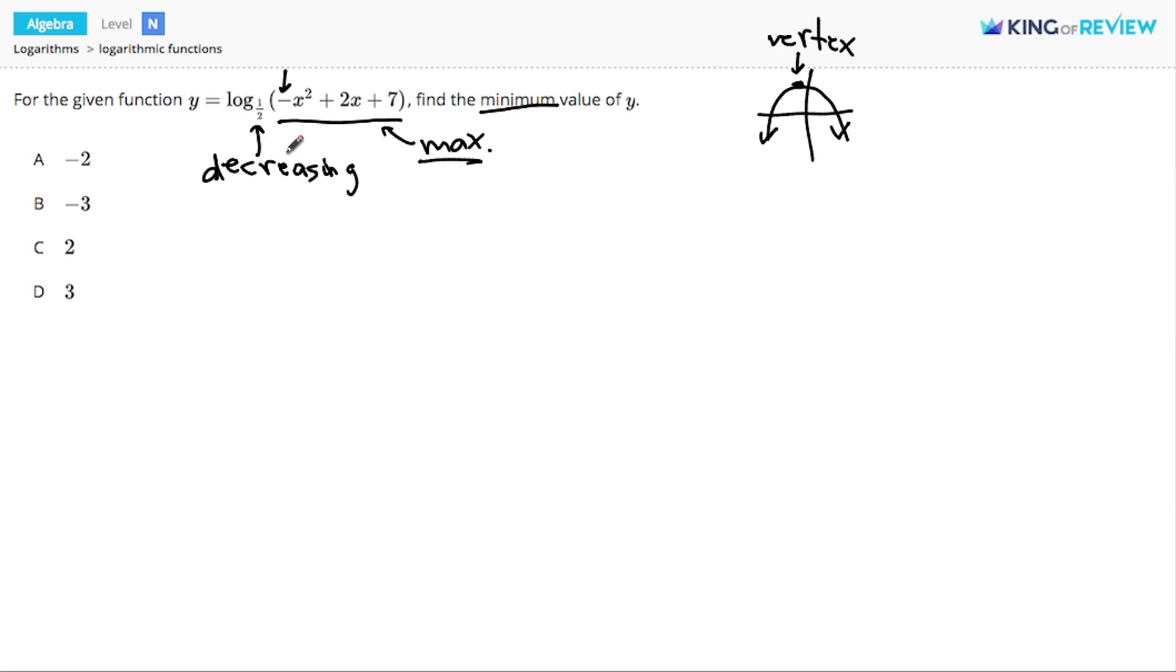So let's take this quadratic equation, this parabola, negative x squared plus 2x plus 7, and try to put it into what's called vertex form. If we can change this into vertex form, that will tell us where the vertex is.